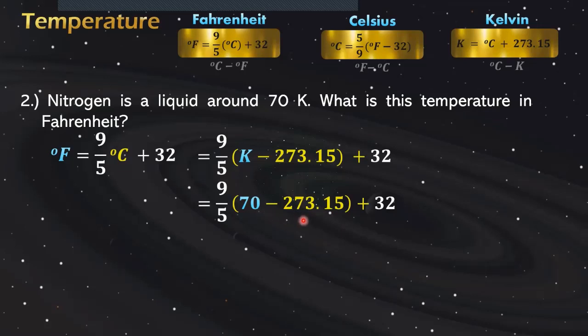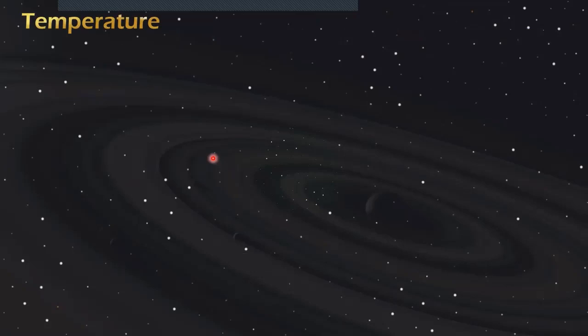Get the product, get the quotient, and then get the sum. The answer is negative 333.67 degrees Fahrenheit.